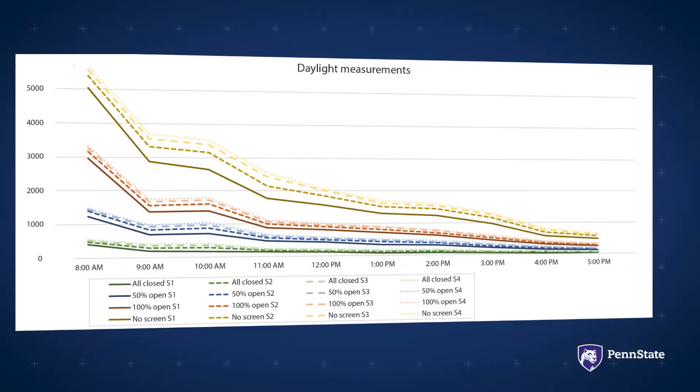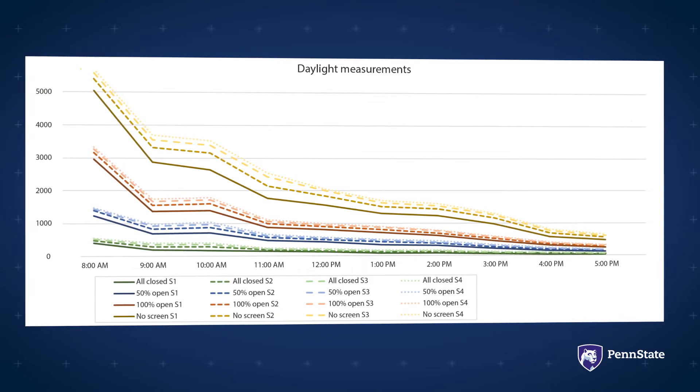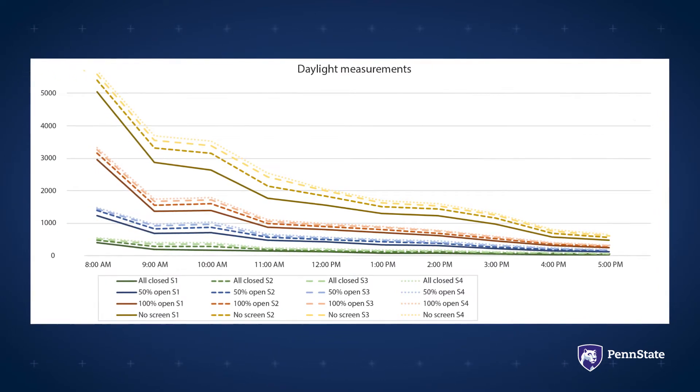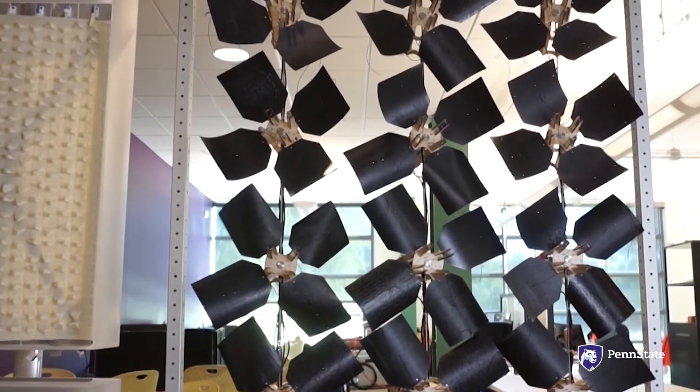Results showed that the screen improved daylight conditions, meaning that less artificial daylight was needed, thereby saving energy. The screen can change its configuration in response to changing daylight conditions.